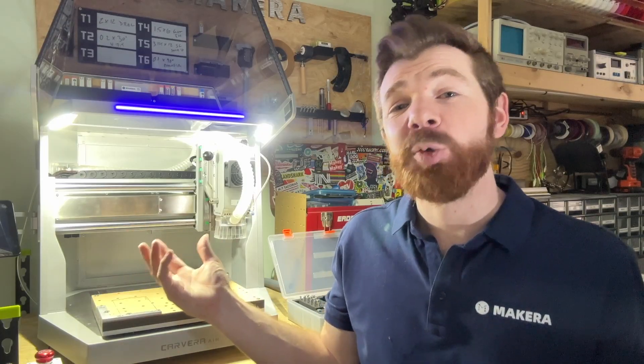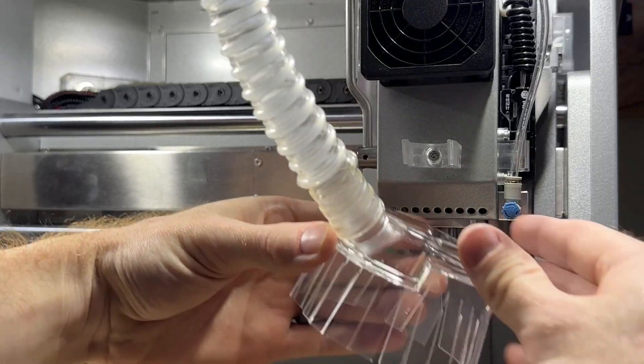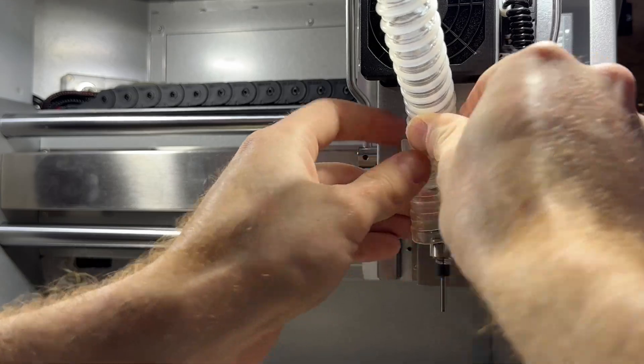So let's look at how this tool change system works. You can do this with the dust shoe on or off, but I've removed it so it's easier for you to see in this tutorial.